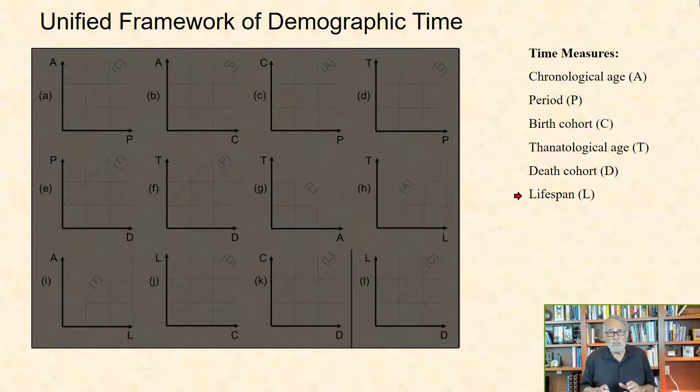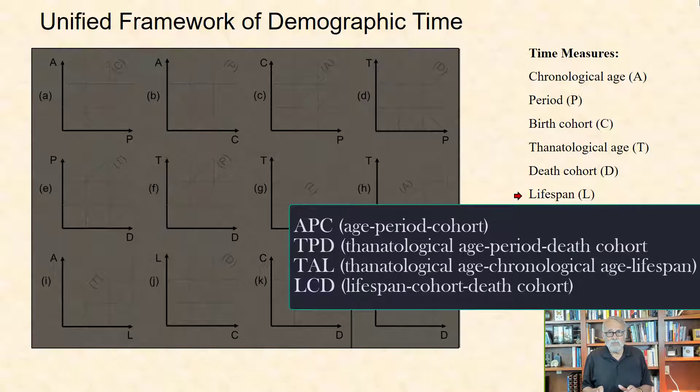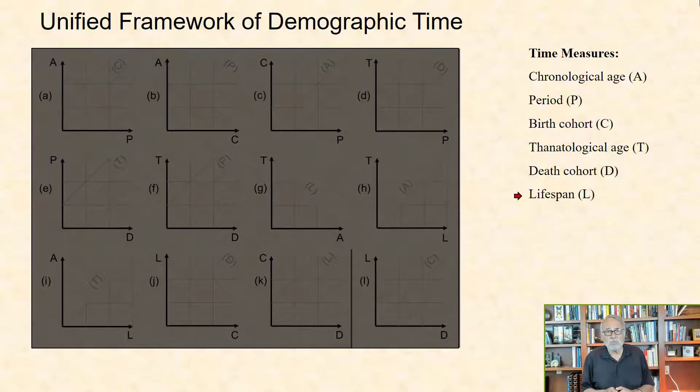These demographers use this terminology and the concept of Lexis measures to create triad identities where any two pieces of information will give the third. Riffe and his colleagues noted that there are four informative triad identities formed by the various combinations of three measures, the relationships of which are presented in Lexis-like diagrams shown here, including APC, TPD, TAL, and LCD. We use their approach applied to biographical and historical information on eminent biologists and demographers to illustrate these identities by giving brief descriptions of three permutations within each of the four triads.